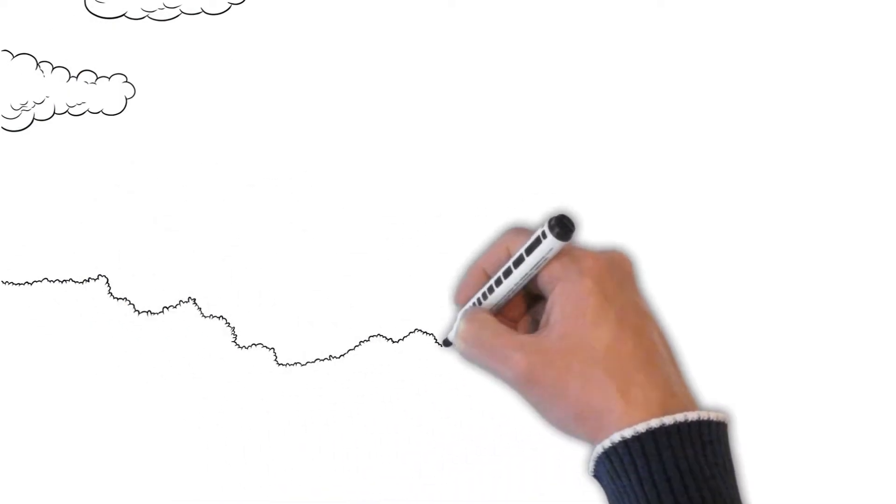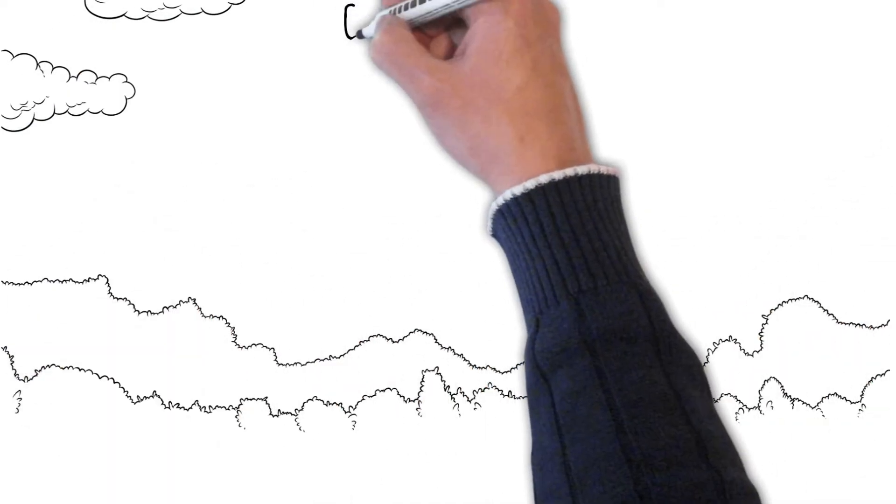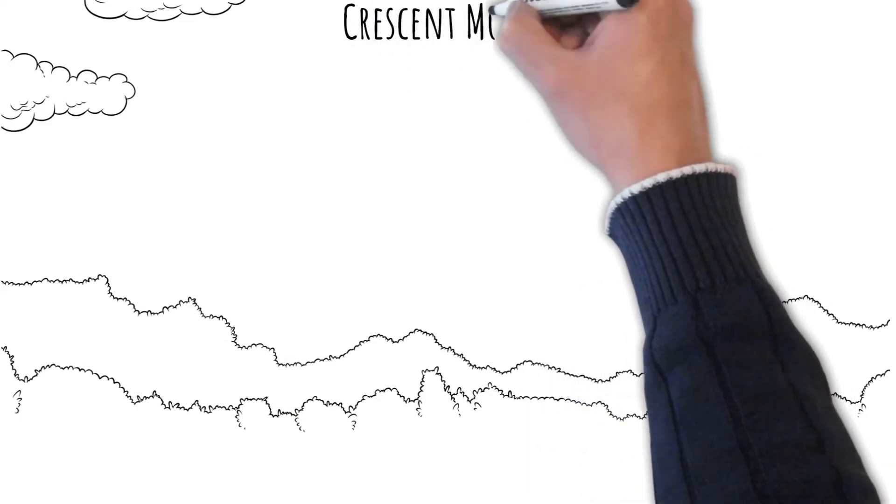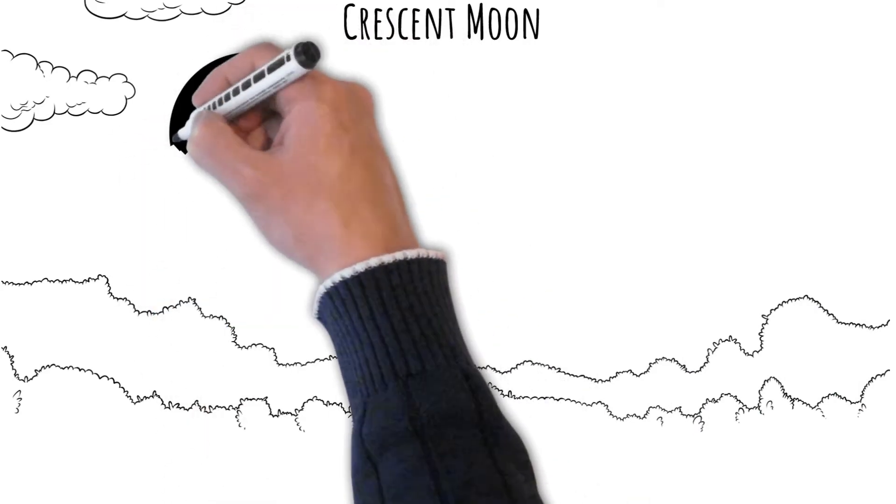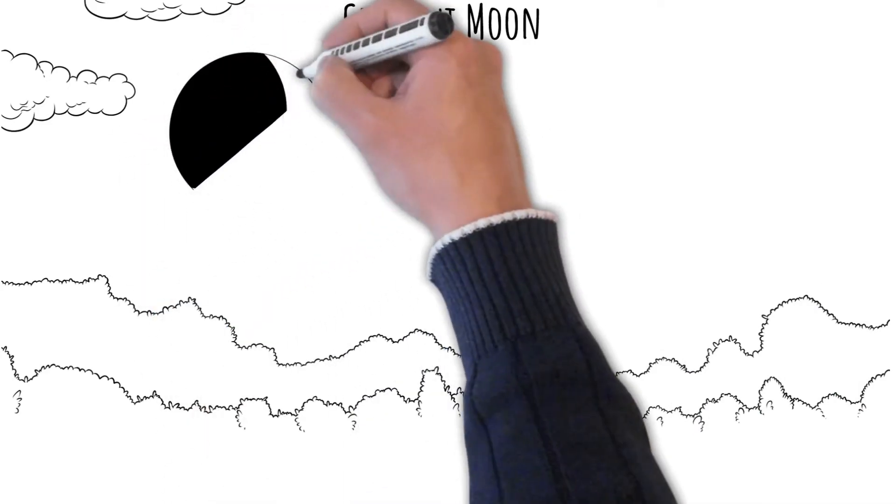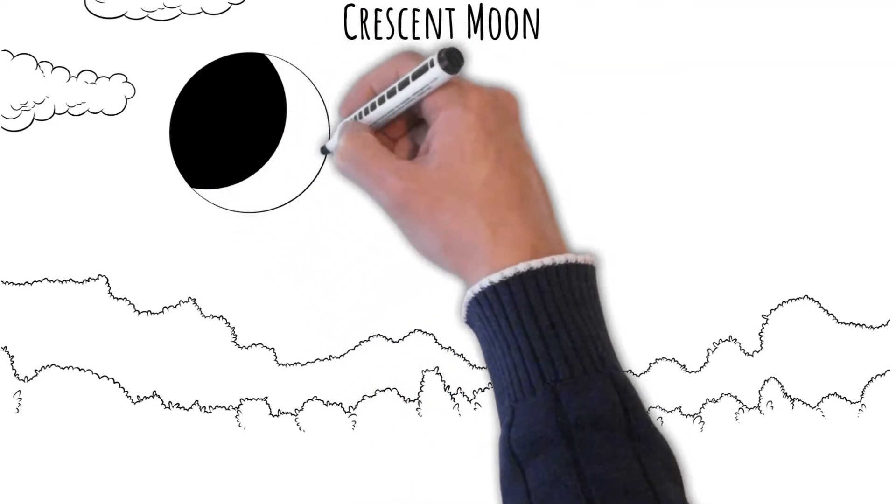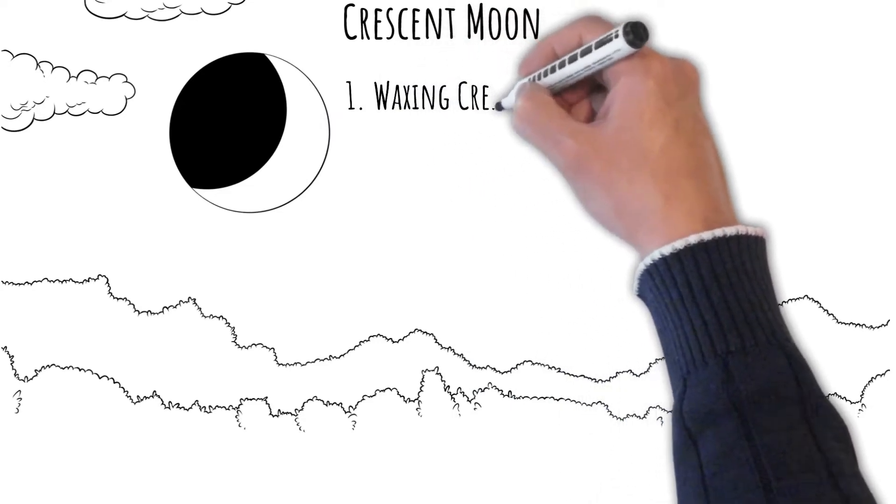Now the next moon phase is the crescent moon. This is where the illuminated side of the moon is facing mostly away from us with just a little sliver observable from Earth. There are two types of crescent moons, the waxing crescent and the waning crescent.